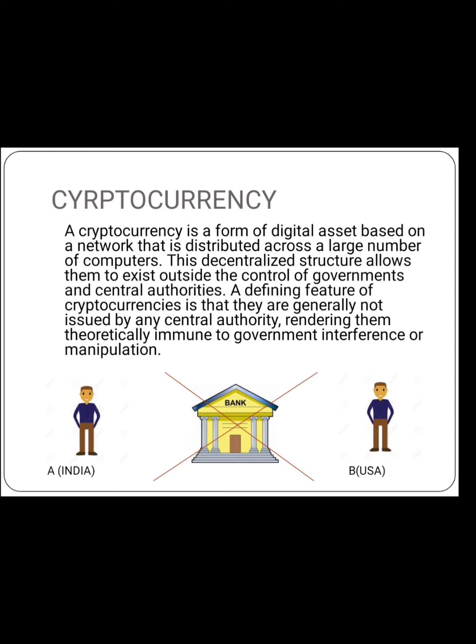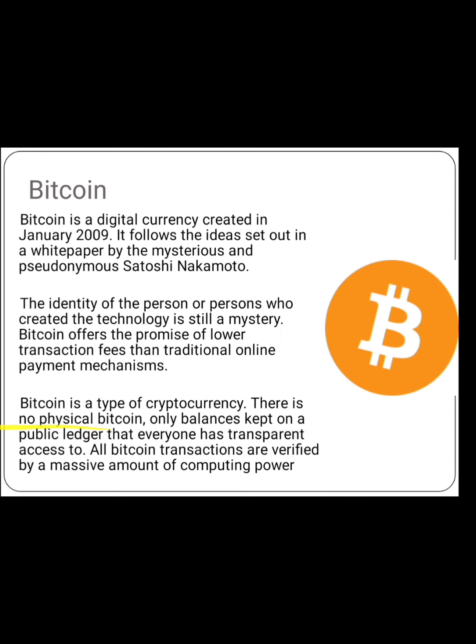Let us read more about cryptocurrencies and types of cryptocurrencies. The first type is Bitcoin. Here is the logo of Bitcoin. Bitcoin is a digital currency created in January 2009. It follows the idea set out in the white paper by the mysterious and pseudonymous person Satoshi Nakamoto. The person is still unknown — we don't know if he is still alive or dead.